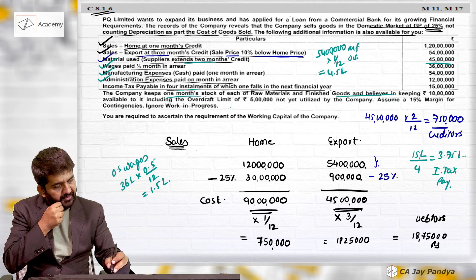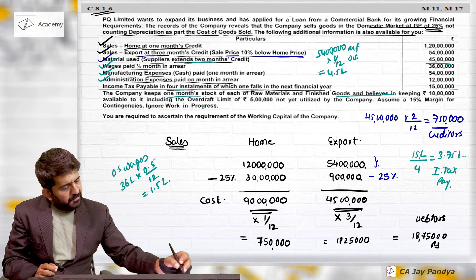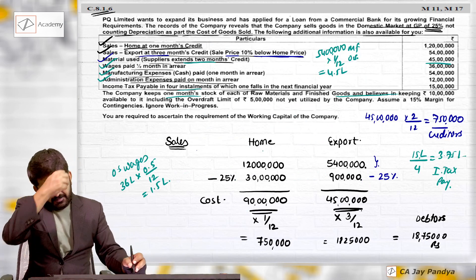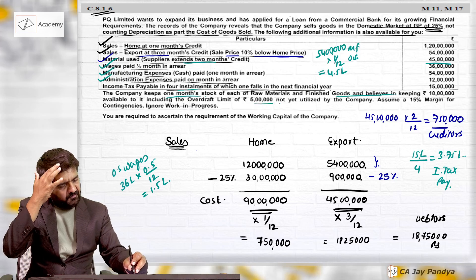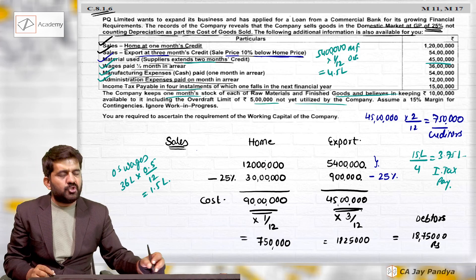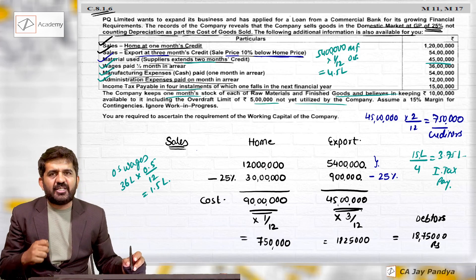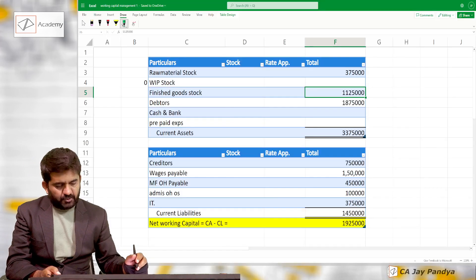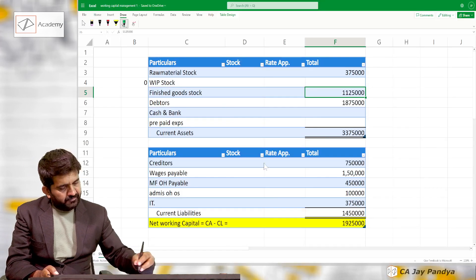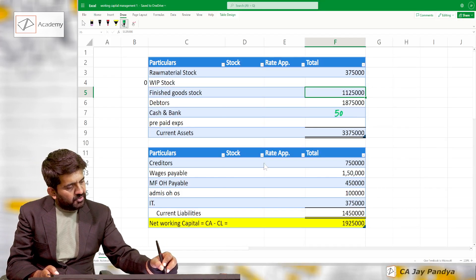The company wants 10 lakhs available, including an overdraft limit of 5 lakhs not yet utilized. Since 5 lakhs is already available via overdraft, only an additional 5 lakhs cash and bank balance is required.